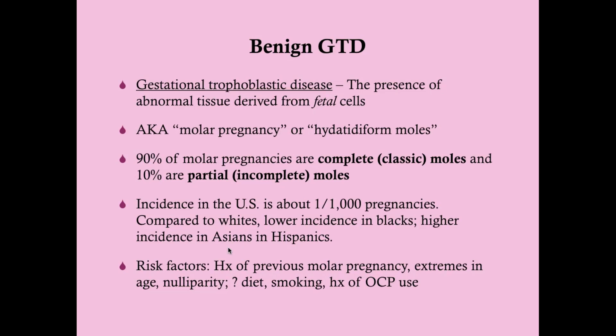Risk factors for benign gestational trophoblastic disease: the most important is a history of a previous molar pregnancy. The baseline risk is 1 in 1,000 (0.1%), but if a woman has had a previous molar pregnancy, her risk goes up 10 times to 1%. If she's had two molar pregnancies, her risk rises to 16–28%. Other risk factors include extremes of age, nulliparity. Women older than 35 are also at higher risk for developing malignant GTD. Questionable risk factors include diet, smoking, and history of contraceptive use.